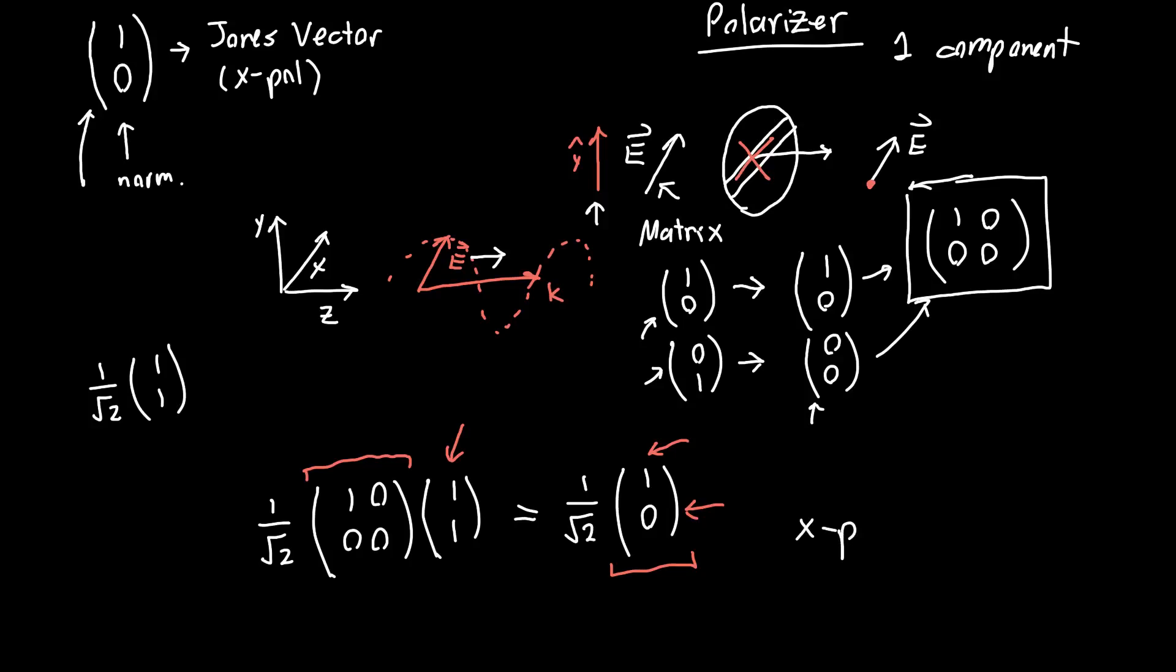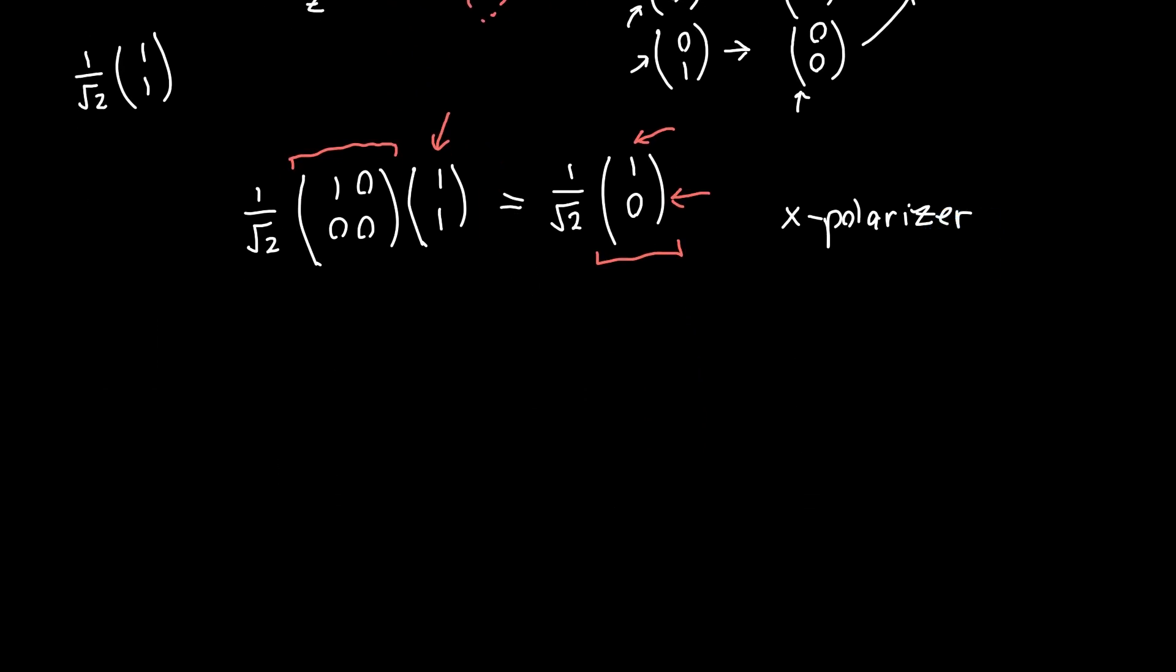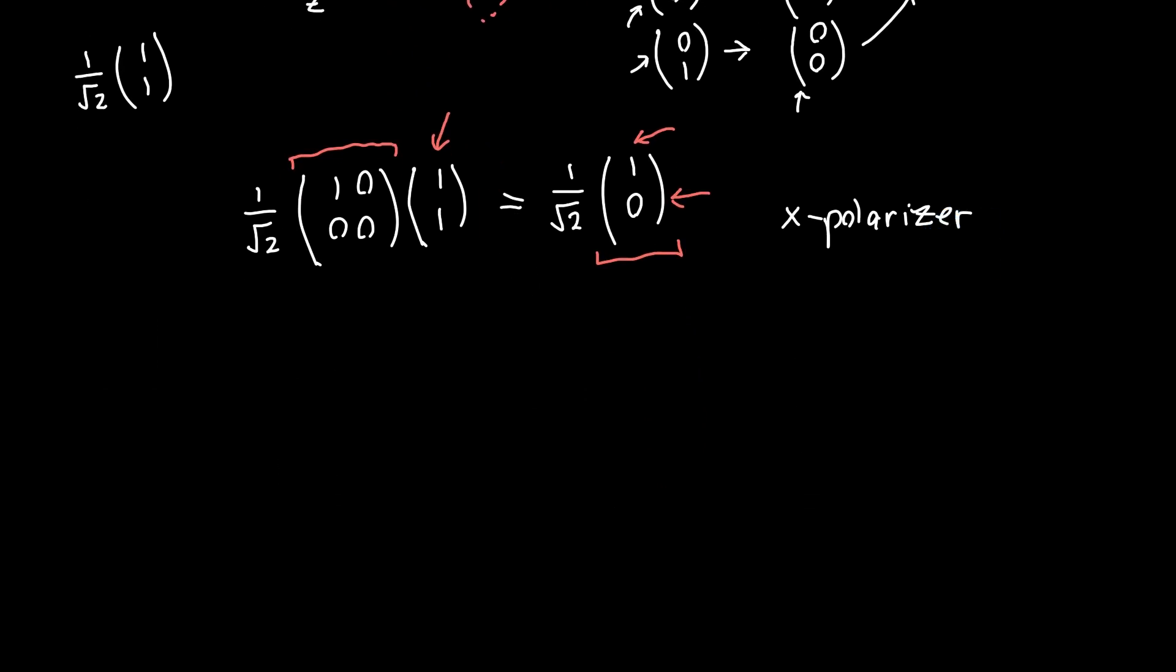This was an x polarizer. What about a y polarizer? For a y polarizer we're passing through y polarized light and killing any x polarized light. So if we had x polarized light (1,0), it becomes (0,0), whereas if we had y polarized light it passes right through. We can use these to construct a matrix [[0,0],[0,1]], which looks similar to before, just the position of the one is changed.